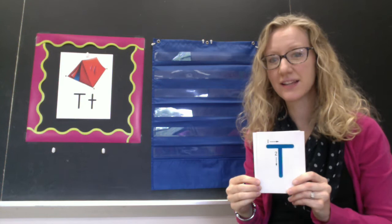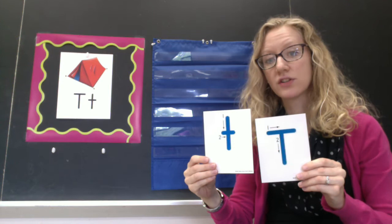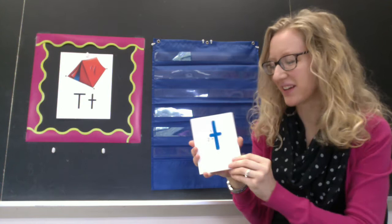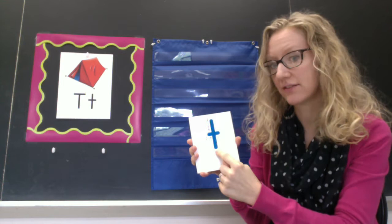Lowercase t is similar to a capital T, except instead of making your cross on the top, this time you make your cross in the middle. So, starting at the top, straight line down, cross in the middle, straight line down, cross in the middle.